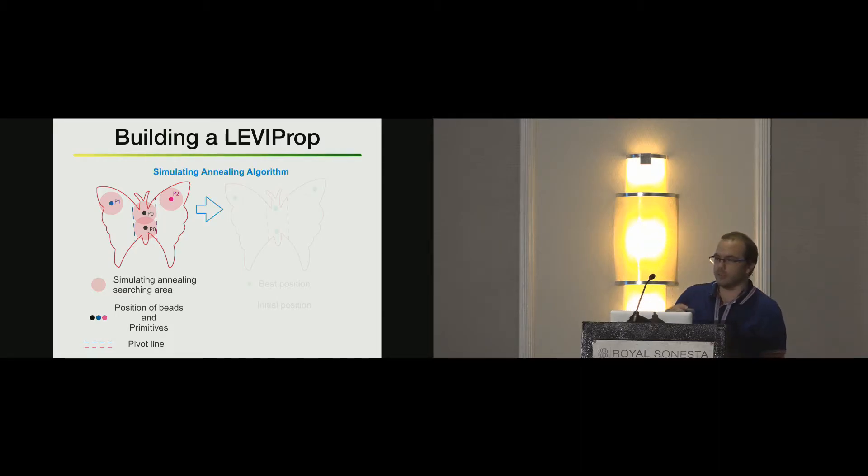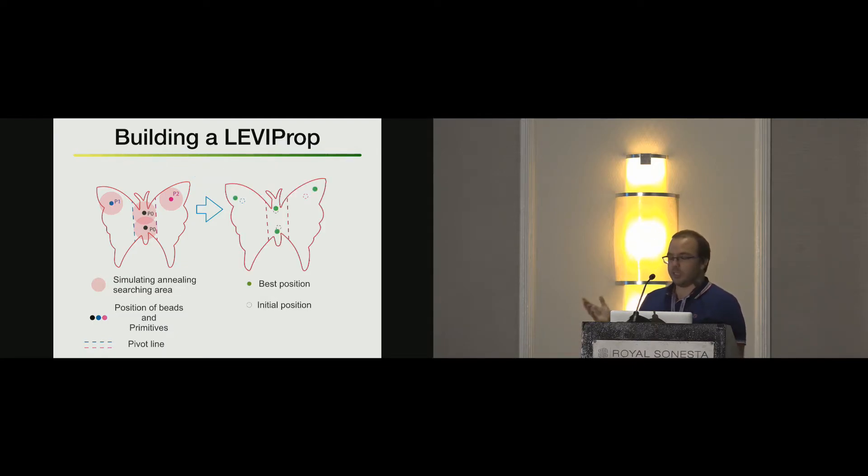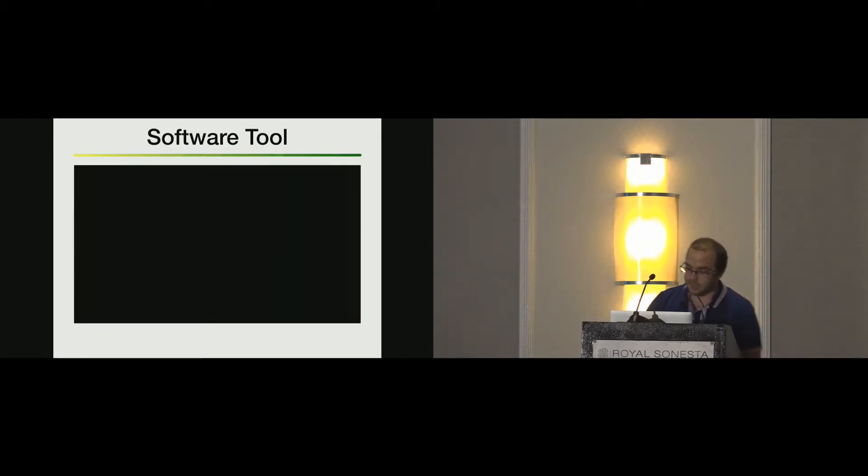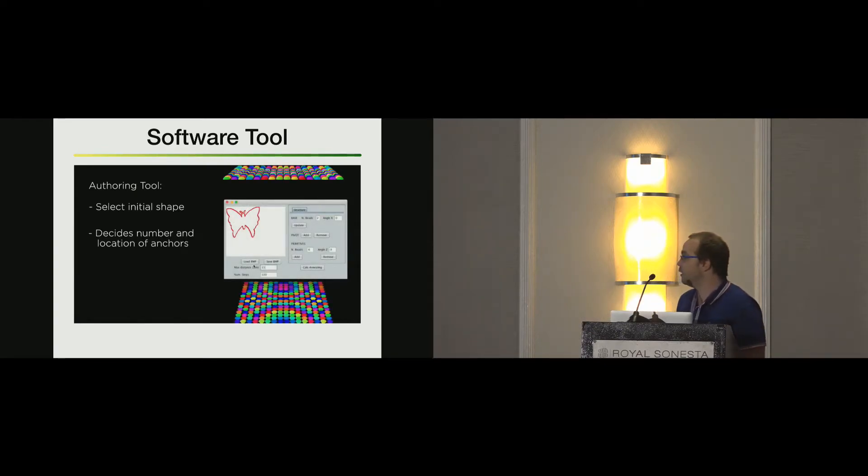But the optimal position of the bit actually is calculated by the simulated annealing algorithm, comparing the stiffness in the intended position and translation. And the important thing here is that the software calculates the best location of the bit depending on the areas the bit replaces and the intended rotation. But also the tool outputs a file with the shape, the circle of the best position of the bit, and the pivot line. Later, the user only needs to send this file to the laser cutter, and it will create a delivery prop.